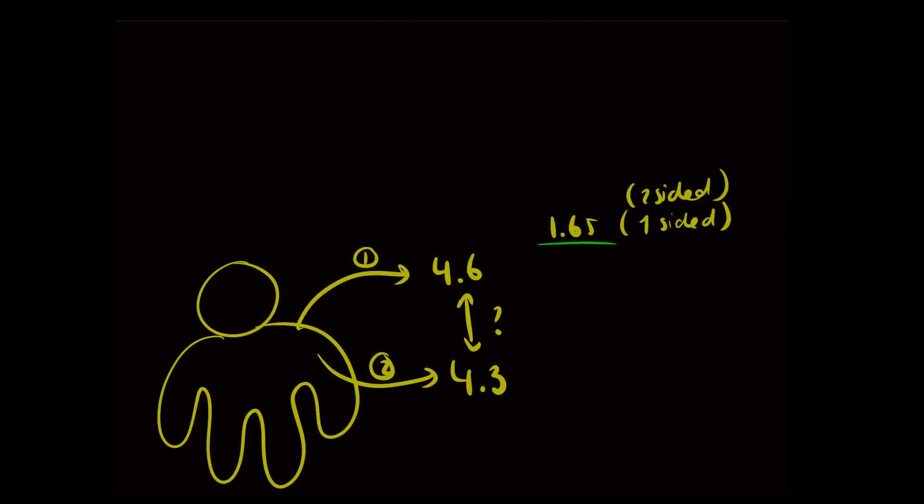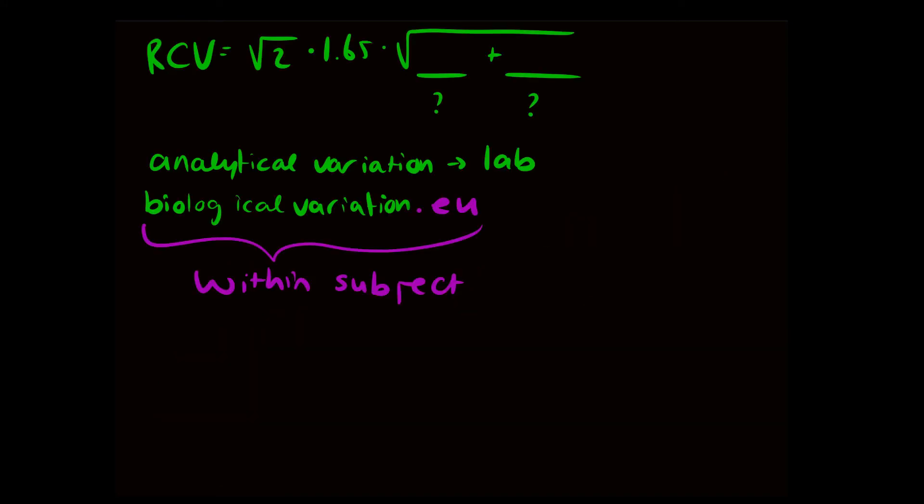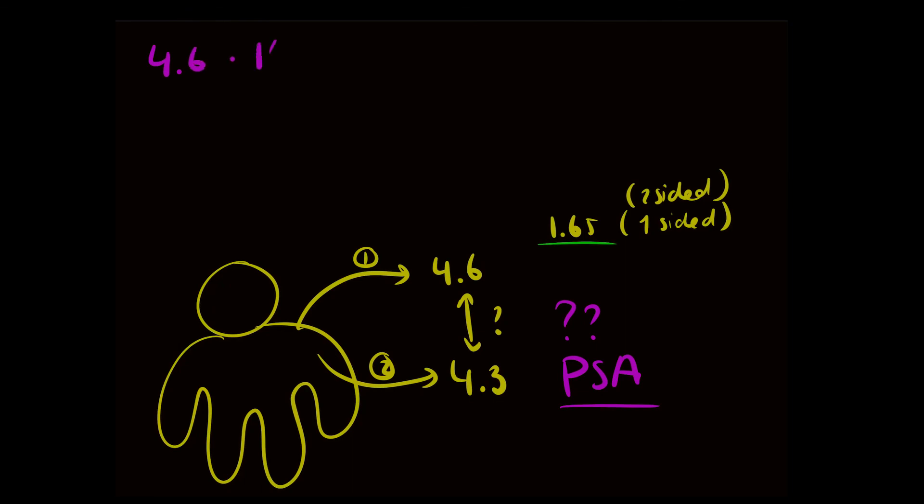Let's go back to our example. We will use the marker PSA, which is used in the diagnosis of prostate cancer. The biological variation of PSA is 6.8, and the laboratory informs us that the analytical variation is 2%. Now the formula can be filled in, and this results in an RCV of 16.5%. If we multiply our first value, 4.6, by 16.5%, we obtain a value of 0.76. The values 4.6 and 4.3 are less than 0.76 apart from one another, and therefore we can deem that the second value is not significantly lower than the first.